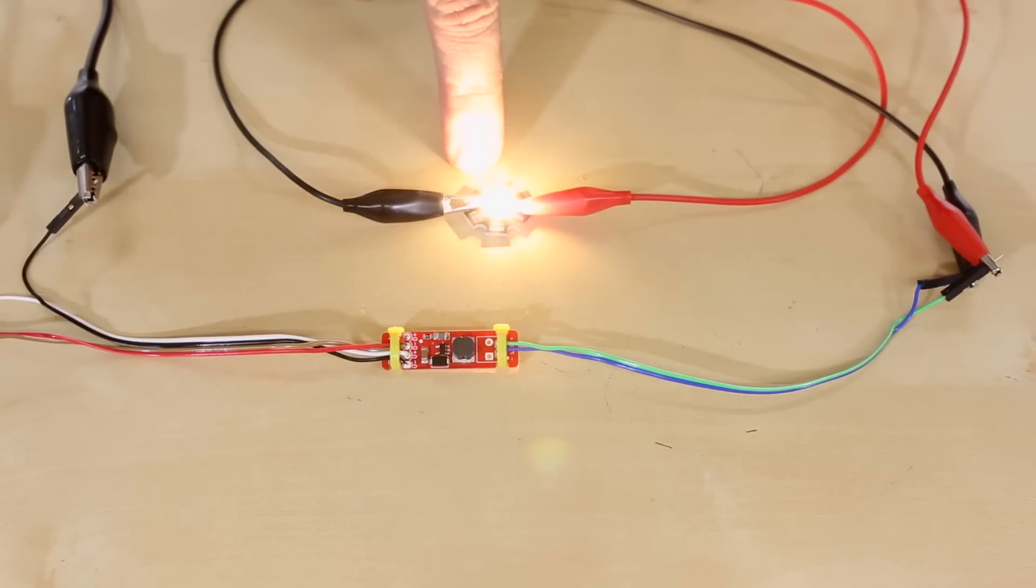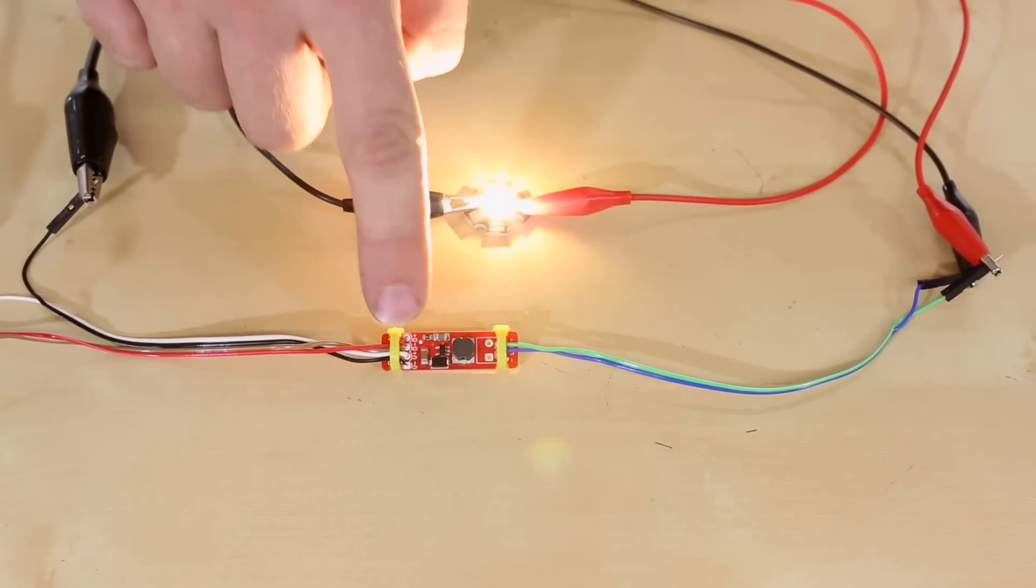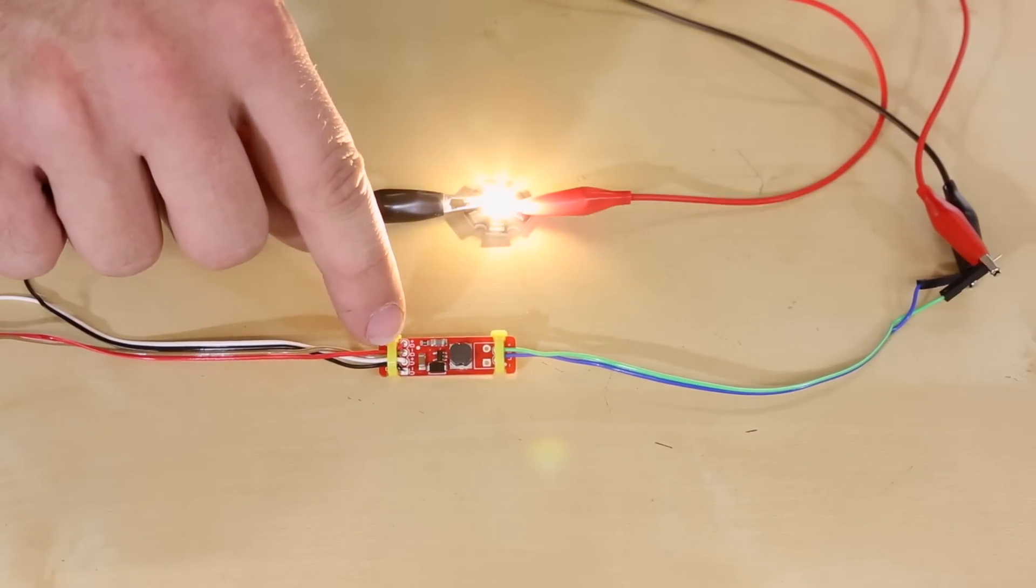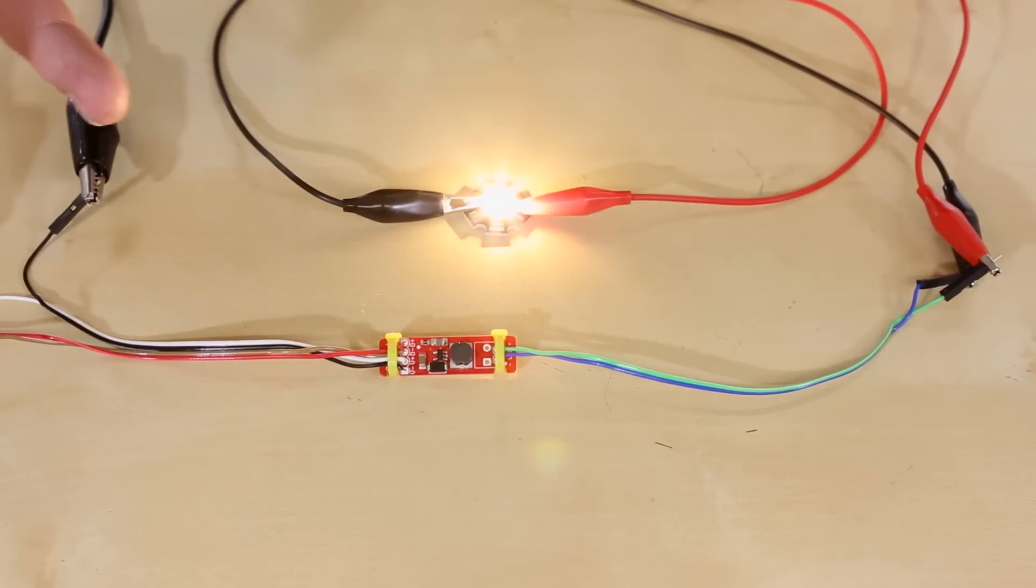Now if you wanted to dim this you can connect a PWM signal or an analog voltage to these two pins right here. These are the dimming pins. And as long as you're supplying a voltage between half a volt and two and a half volts it will actually dim the LED accordingly from zero to 100 percent brightness.